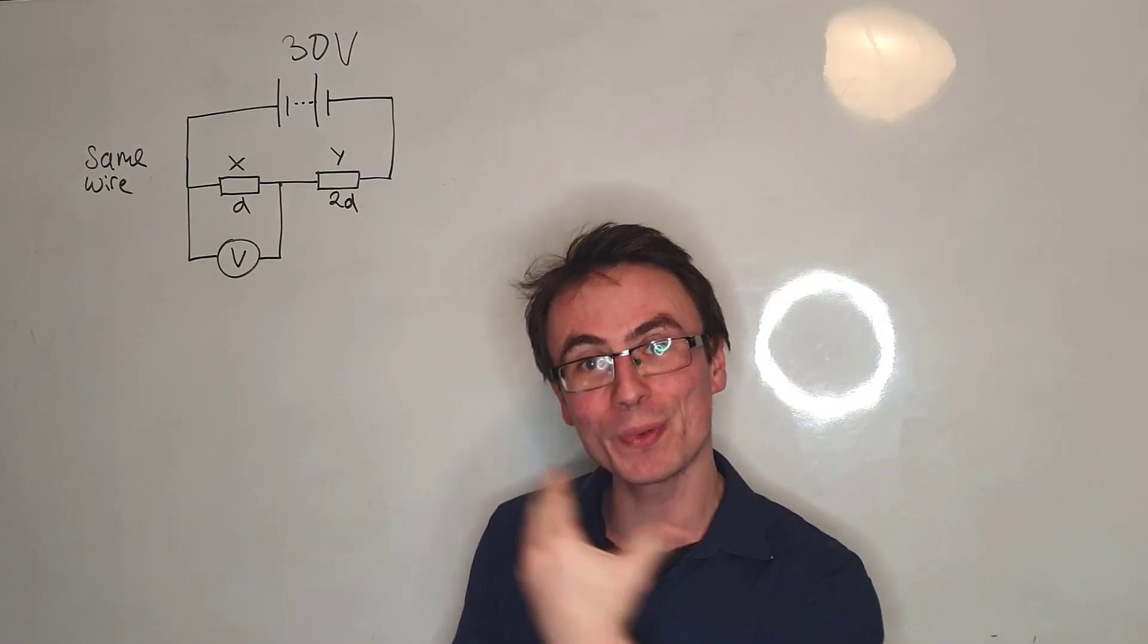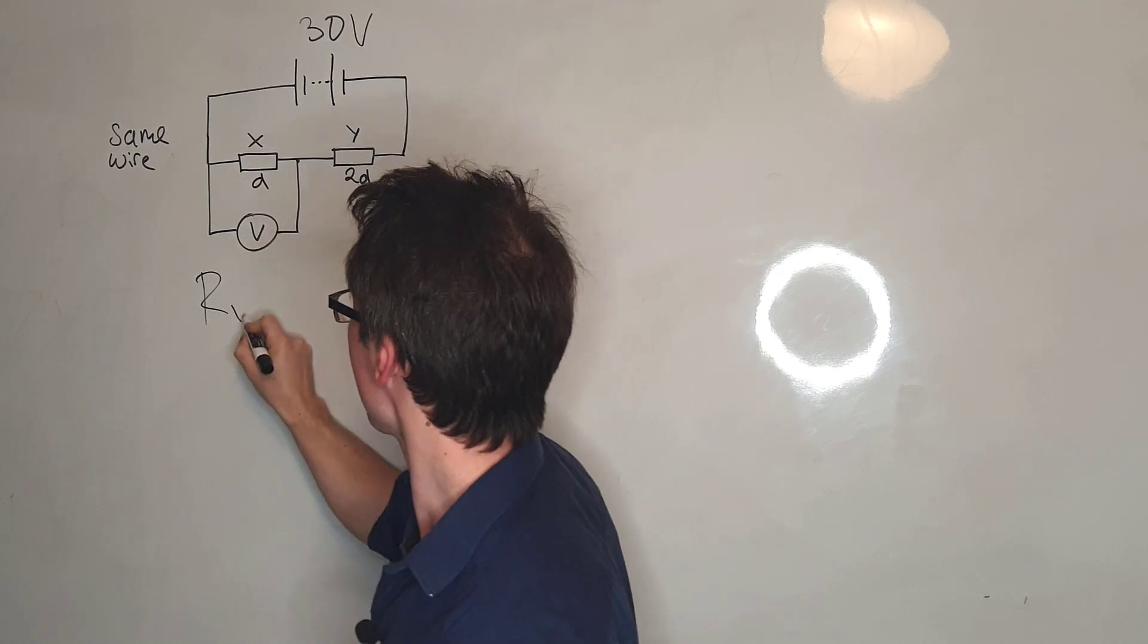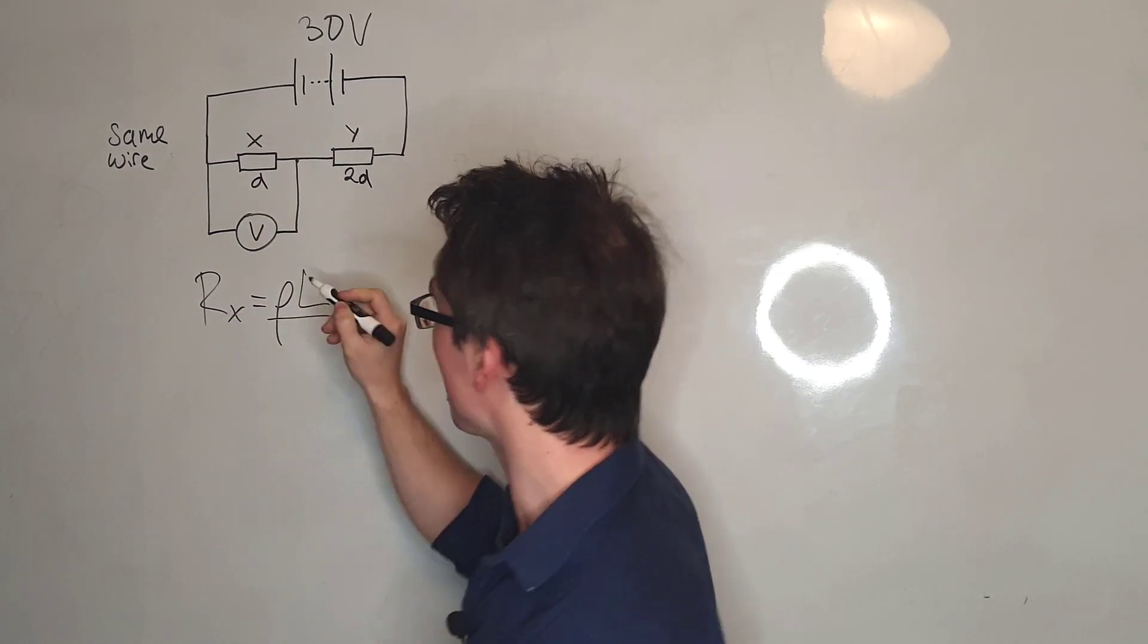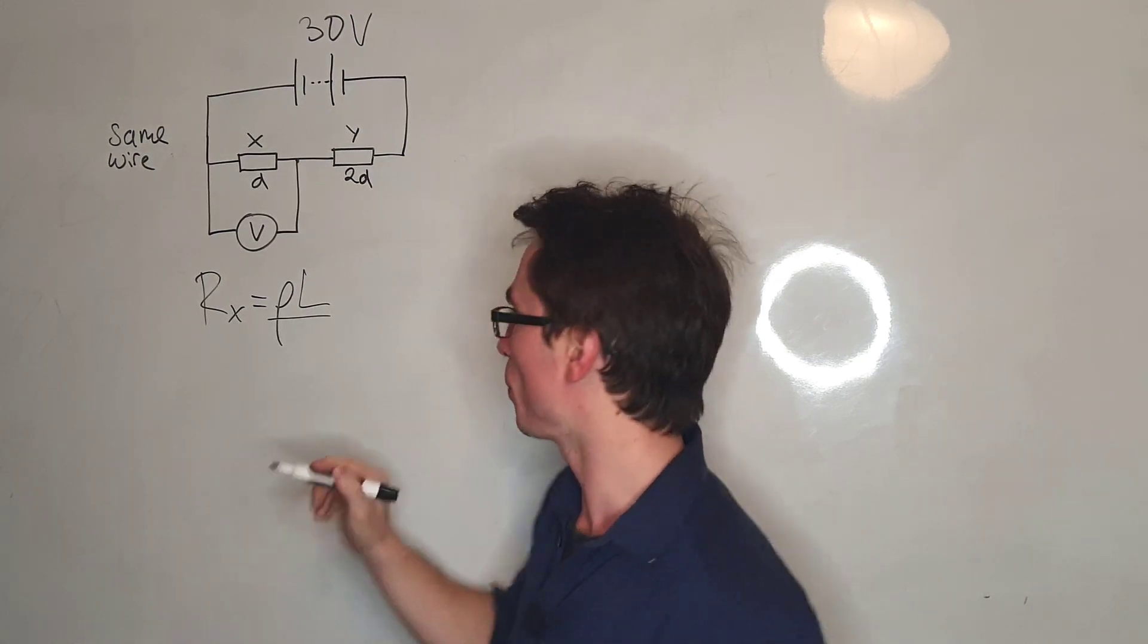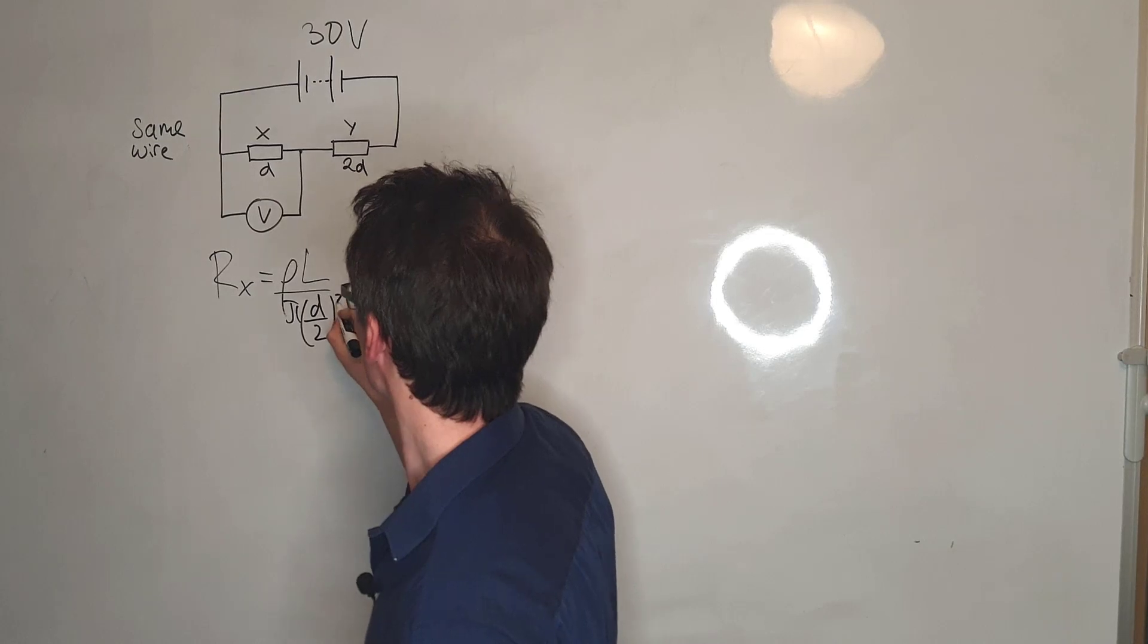The equation for resistance in terms of resistivity is that Rx will be equal to the resistivity, so it's proportional to the length and inversely proportional to the surface area. The surface area of a wire is just π R squared, so I'm going to write this as π(D/2) squared.